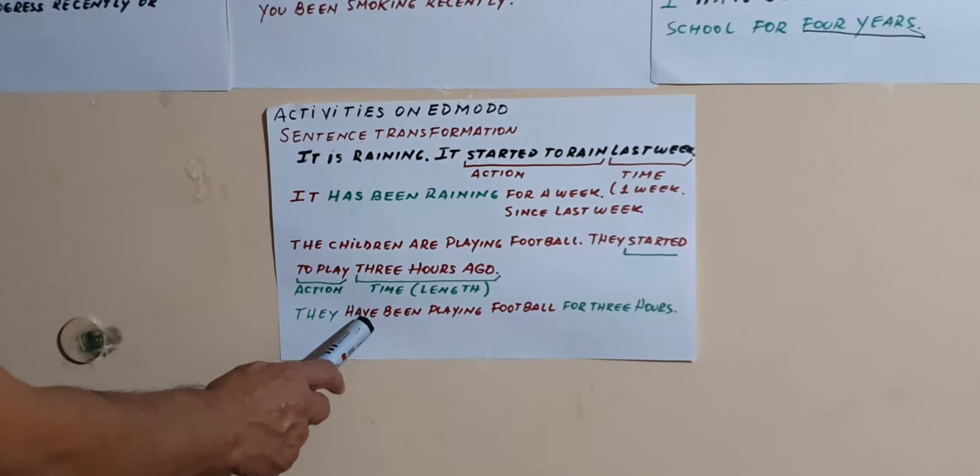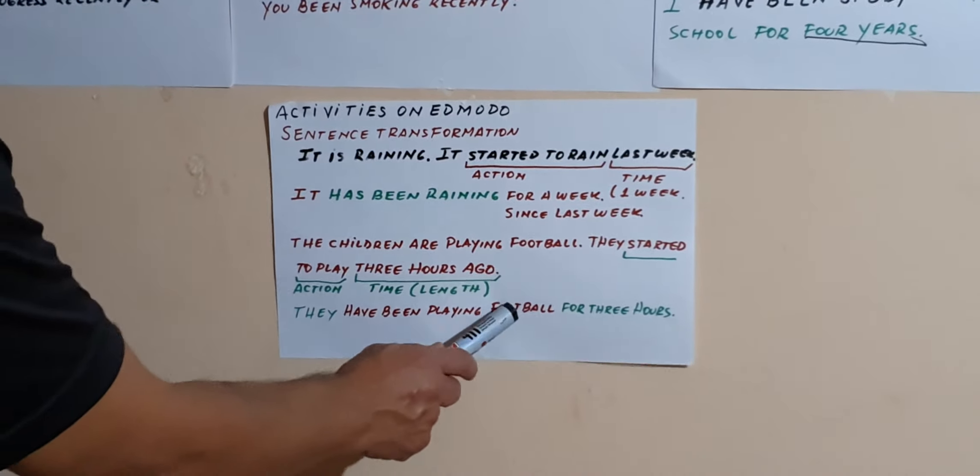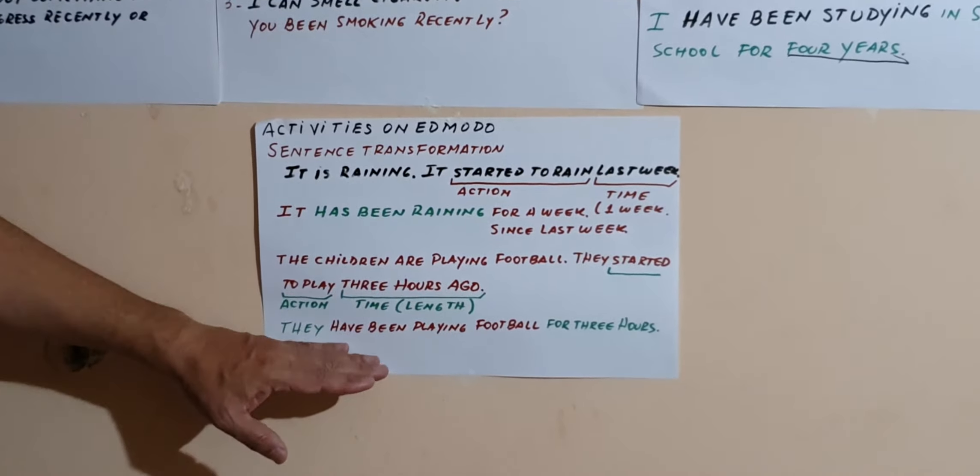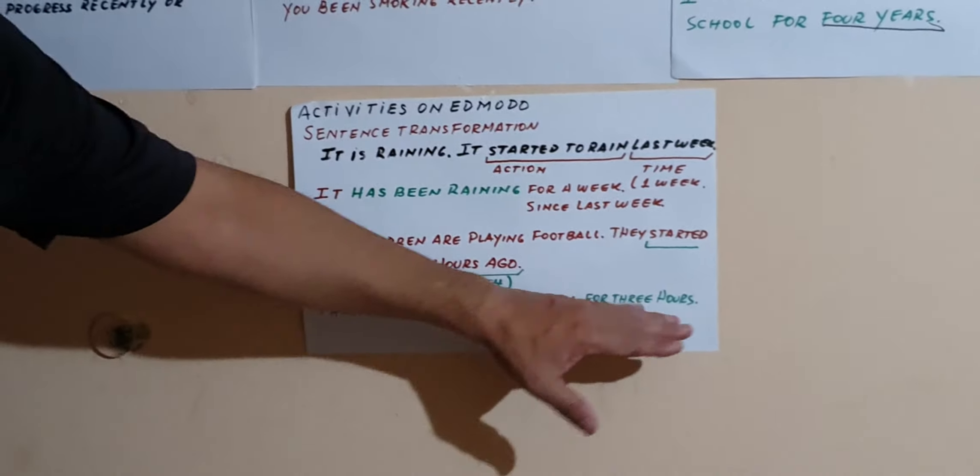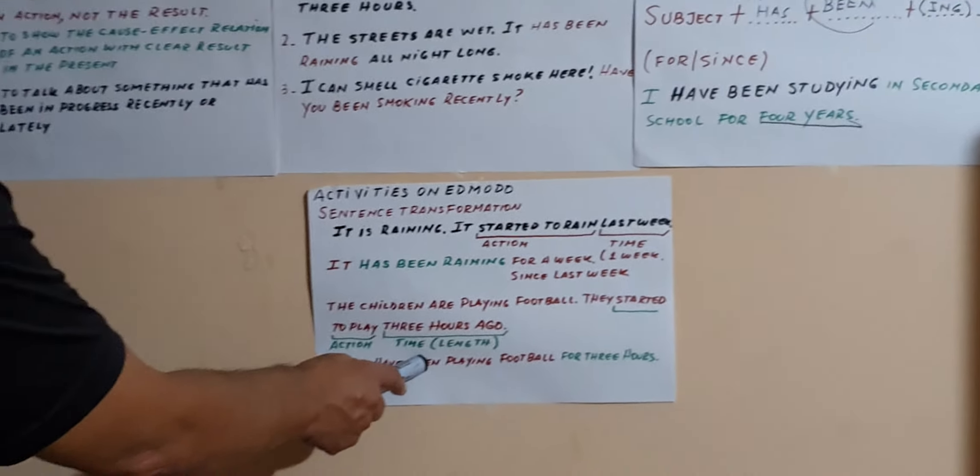Entonces, presente perfecto continuo: they, porque the children - they have. Porque have y no has? Porque el sujeto es they. They have been playing football for three hours. So giving énfasis to the duration of the action. They have been playing football for three hours.